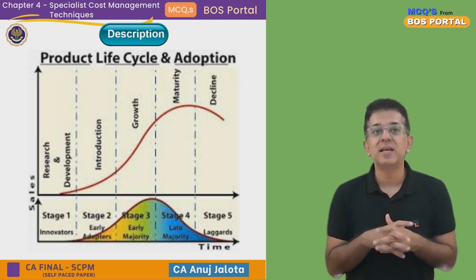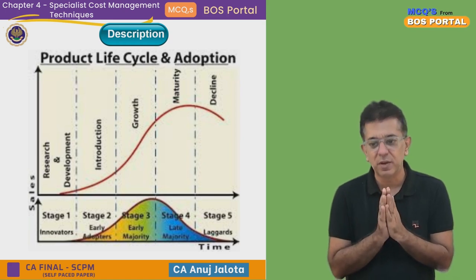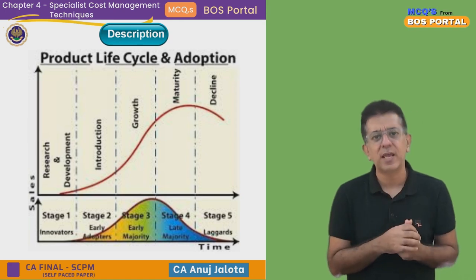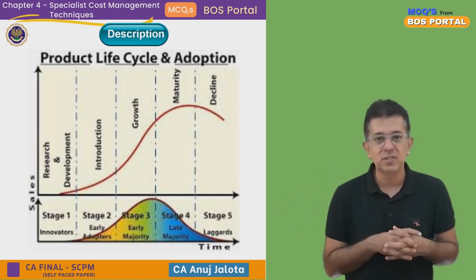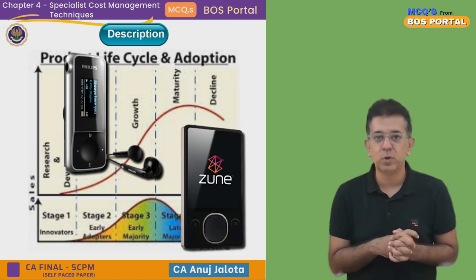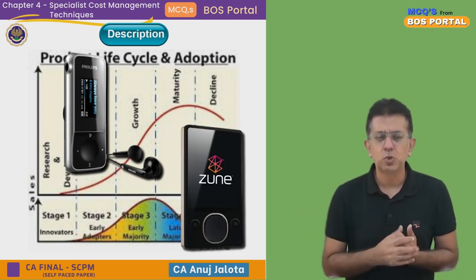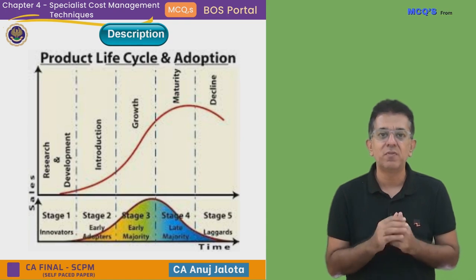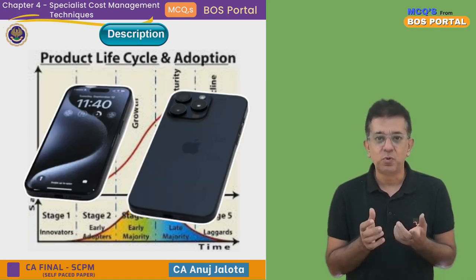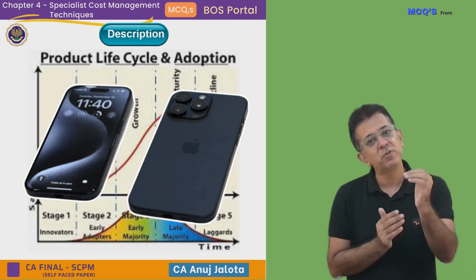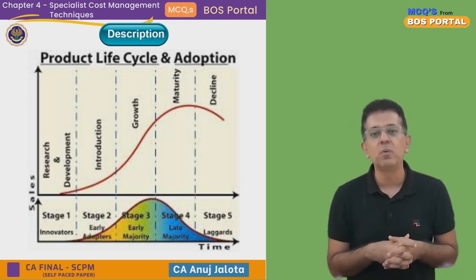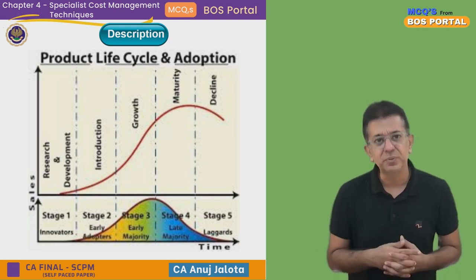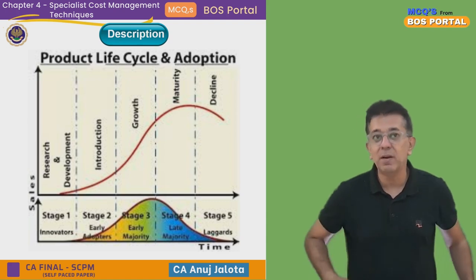Then iPod entered the maturity stage — everybody wanted it, but many other companies came out with their own MP3 players. Philips launched one, Microsoft launched their product called Zune, but these were not very successful. The biggest competition came from Apple itself — they launched the iPhone, which had iPod built in. So sales of iPod started to decline. Around 2019, they made their last version and discontinued iPod forever. It went through all the life cycle stages.